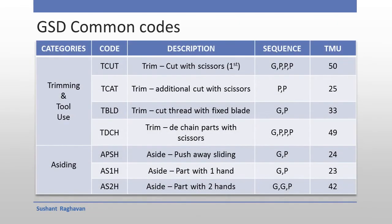GHD Common Codes — Trimming and Tool Use category: TCUT — Trim cut with scissors (first cut); TCAT — Trim additional cut with scissors; TBLD — Trim cut thread with fixed blade; TDCH — Trim de-chain parts with scissors. Saiding category: APSH — Said push away sliding; AS1H — Said part with one hand.